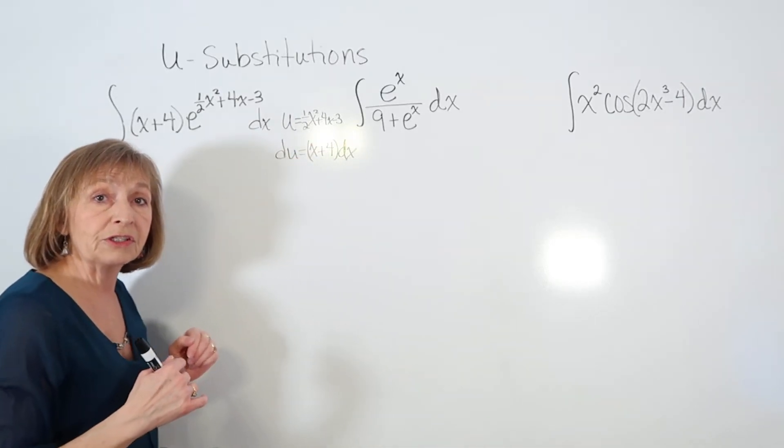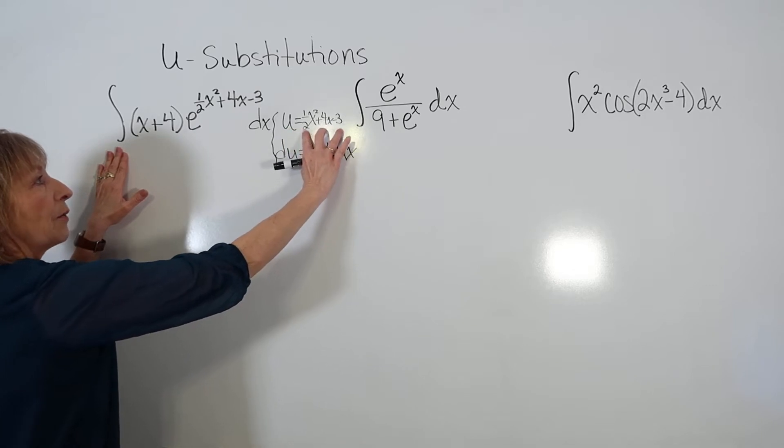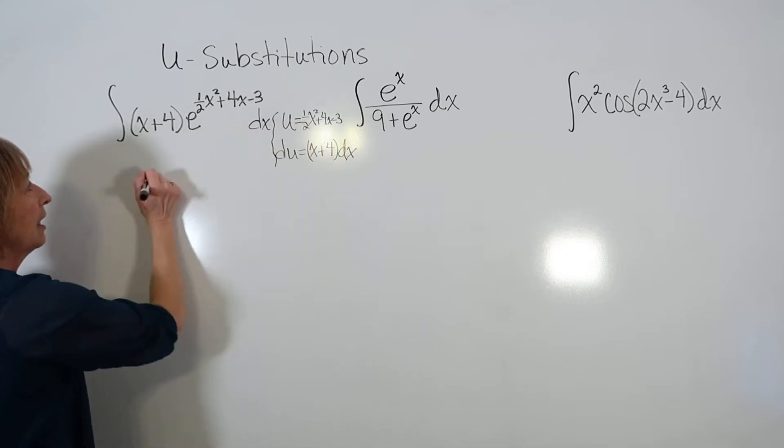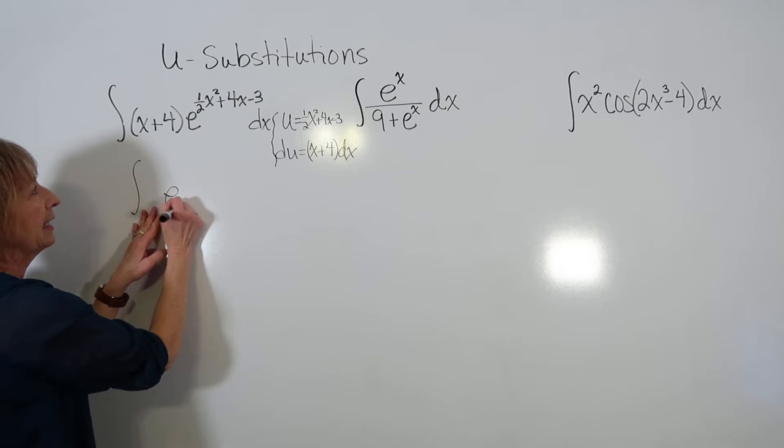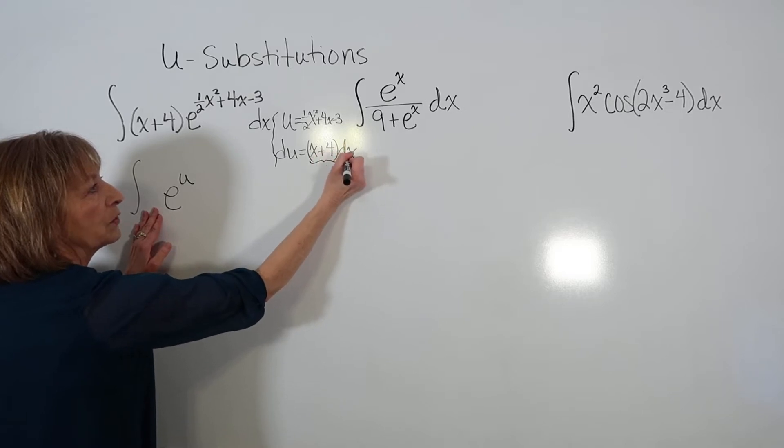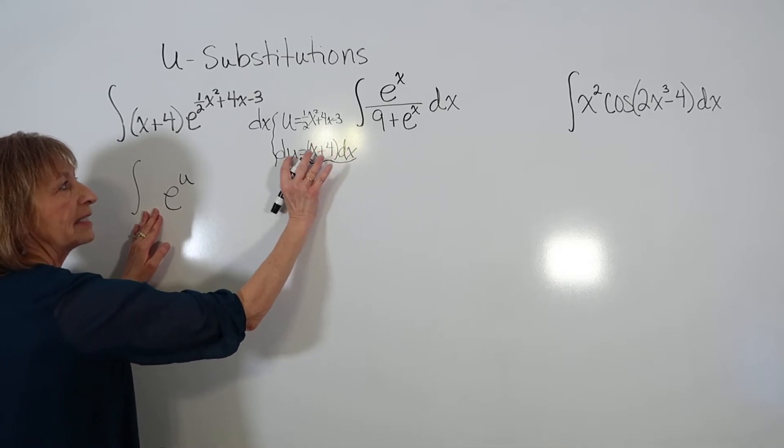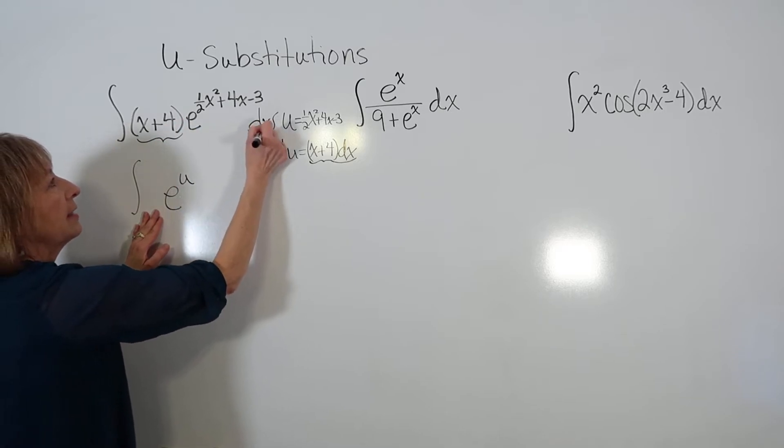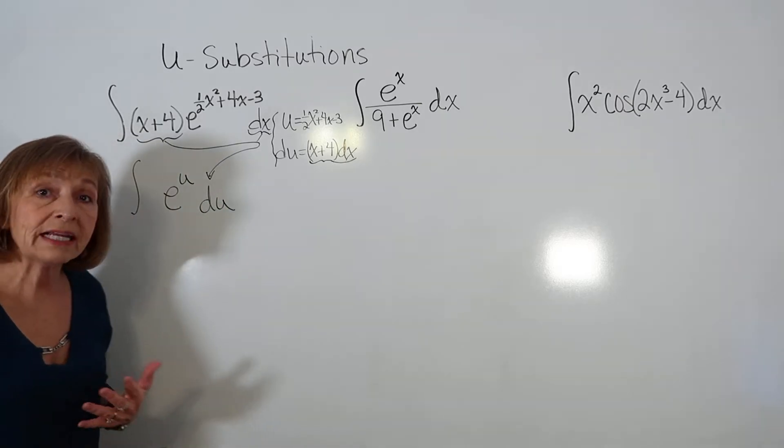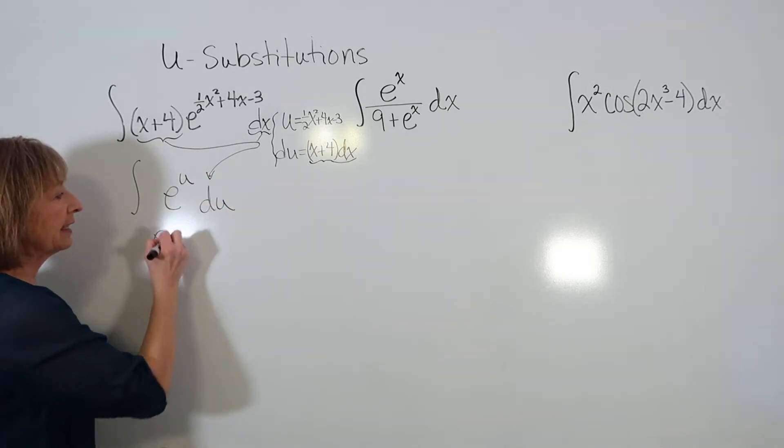Now come back over to the original problem and make your substitutions. So u is going to take the place of this entire 1/2 x² plus 4x minus 3, so I'll have my indefinite integral, I'm going to have my e to the u, and then I have to take out the factor x plus 4 as well as the factor dx, all of that goes out because that's what's represented by the du. So this x plus 4 and this dx together combine to make a du. Now when I look at that, this is exactly one of my indefinite integral rules. The integral of e to the u du is e to the u plus c.